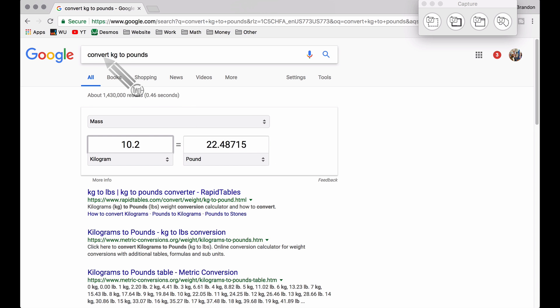And doing a quick search in Google, convert kilograms to pounds, we got 10.2 kilograms and it says we have around 22.48715 pounds. If we round this to the nearest tenth, it's going to be 22.5.